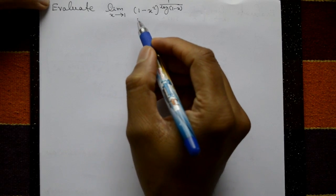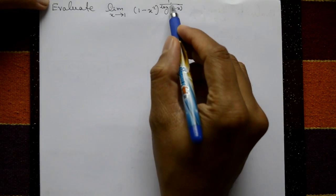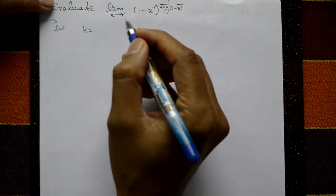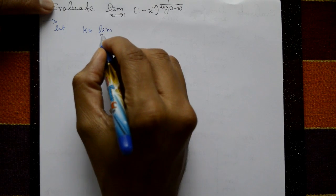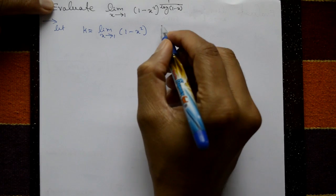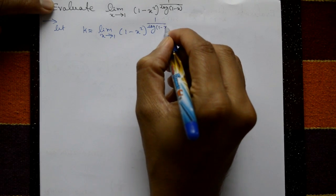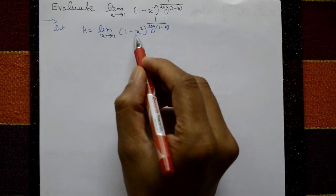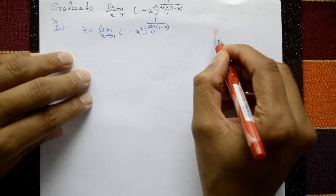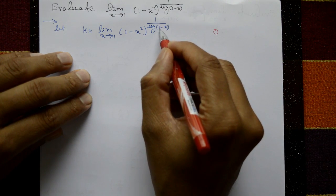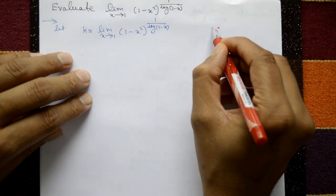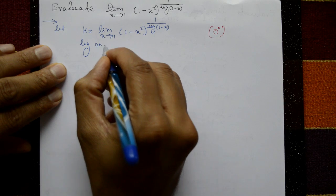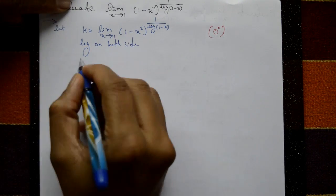Evaluate the limit as x tends to 1 of (1 minus x squared) whole raised to 1 upon log of (1 minus x). Let k equal to this limit. Applying the limit, x equals 1 gives 1 minus 1 equals 0, so the base is 0 and the exponent is 1 by log 0, making it a 0 to the 0 form.